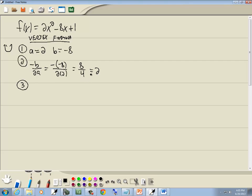Step 3 is to plug that value into your original function where you have an x. So I've got 2 times 2 squared minus 8 times 2 plus 1. 2 squared is 4, 4 times 2 is 8. Minus 8 times 2 is 16 plus 1. That gives us negative 8 plus 1, which is negative 7.